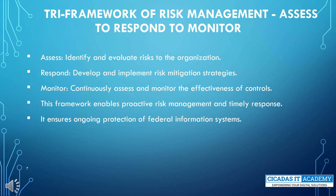The TRI framework of risk management consists of three steps: Assess, Respond, and Monitor. Assess involves identifying and evaluating risks to the organization. Respond focuses on developing and implementing risk mitigation strategies. Monitor involves continuously assessing and monitoring the effectiveness of controls. This framework enables proactive risk management and ensures ongoing protection of federal information systems.